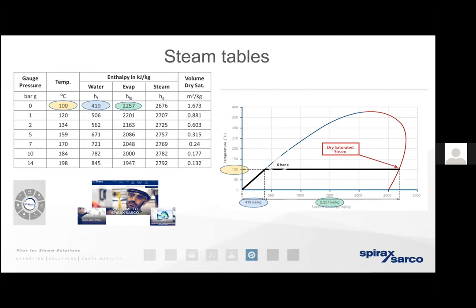Moving across to the temperature-enthalpy curve, using the example of boiling water at atmospheric condition, zero bar gauge — we need to add 419 kilojoules of energy to the water before it boils. At this point the evaporation process begins. Only when we've added the full enthalpy of evaporation — in this case 2,257 kilojoules — to the boiling water can we say the evaporation process has ended. All of the water has gone out of the pan and we now have a mass of steam that is fully dry and fully saturated.